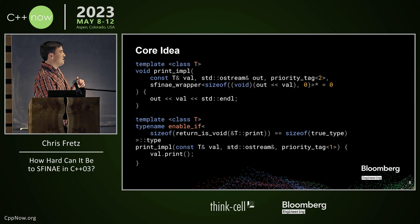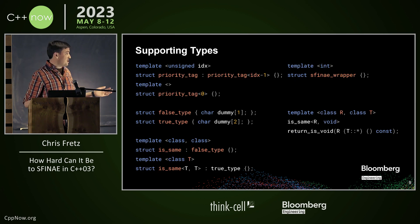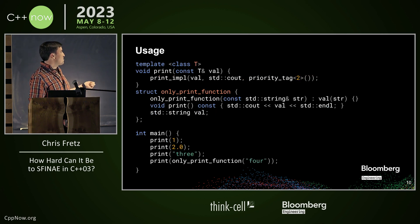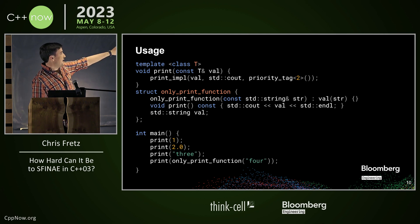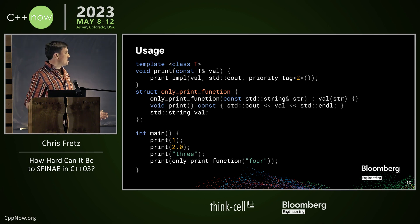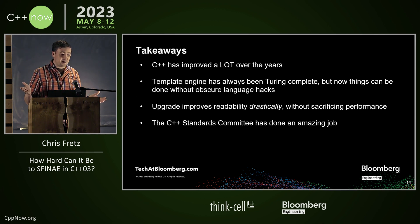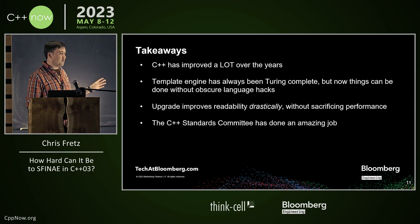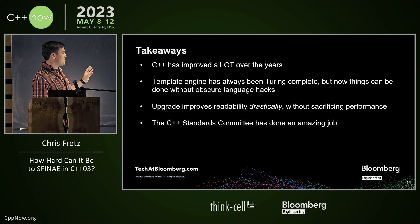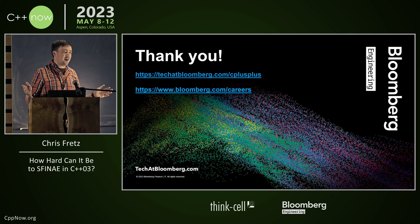I checked it on Clang, GCC, Sun Studio, and the XLC compiler from IBM, and it seems fairly portable. When we call this, it works the way you'd expect. We have to pass in cout so we have something to redirect into, then construct a priority tag and it pretty much works. The takeaways: C++ has improved so much over the years. The template engine has always been Turing complete, but now we can do things without obscure language hacks, which drastically improves readability. The Standards Committee has done an amazing job. And that's five minutes.